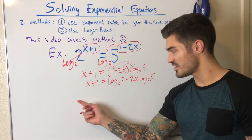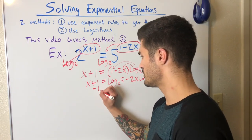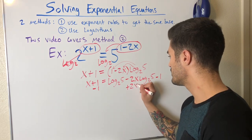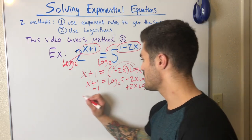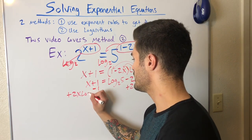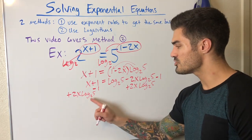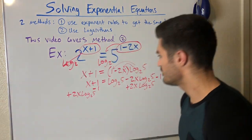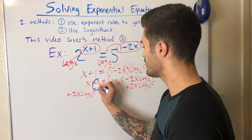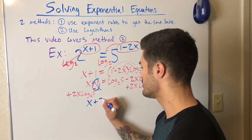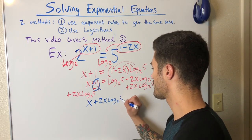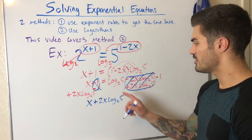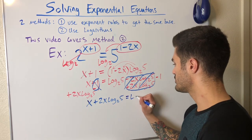Now I have X in two places, so I need to gather all X terms on one side. In one step, I subtract 1 from both sides and add 2X times log base 2 of 5 to both sides. On the left: X plus 2X times log base 2 of 5. On the right: log base 2 of 5 minus 1.